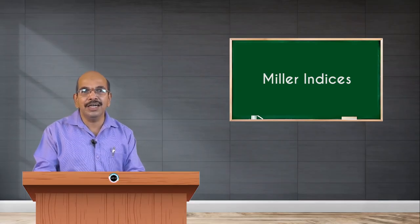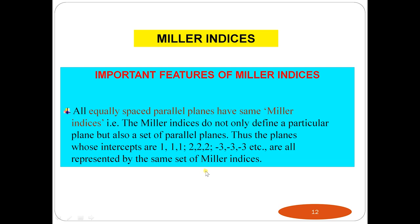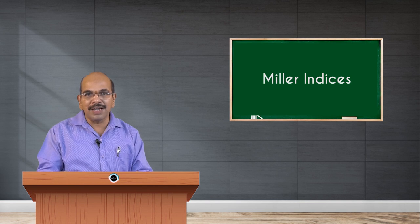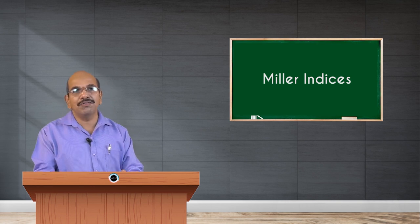Based on intercepts, you can determine the Miller index of any plane. Another important feature is that all equally spaced parallel planes have the same Miller indices. For example, planes with indices (1 1 1), (2 2 2), and (−3 −3 −3) all represent the same set of planes, since dividing by 2 or 3 reduces them to (1 1 1). So all sets of parallel planes share the same Miller index. Thank you.